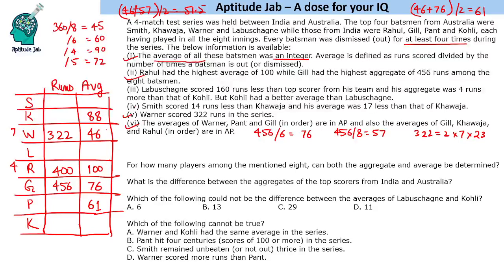Smith scored 14 runs less than Khwaja, and his average was 17 less than Khwaja's, making Smith's average 71. Since Khwaja's average of 88 is even, his total is even, and Smith's total (14 less) is also even. Testing Smith out 4 times: total = 284, so Khwaja = 298, which is not divisible by 88 — not valid. Let's try Smith out 6 times.